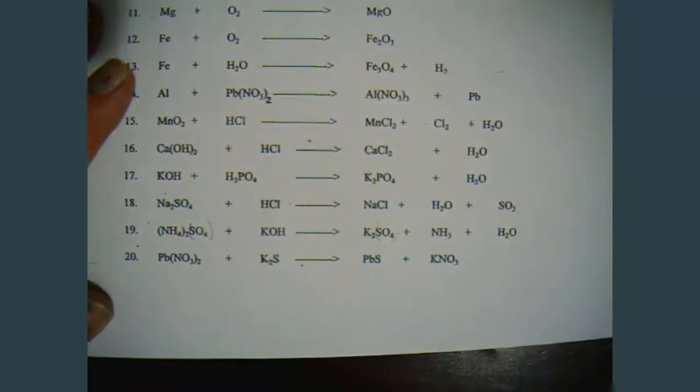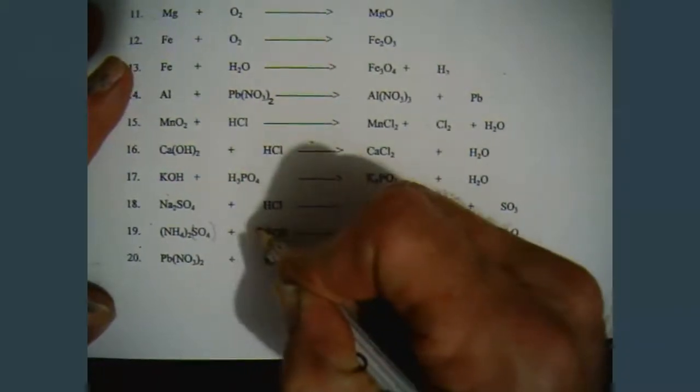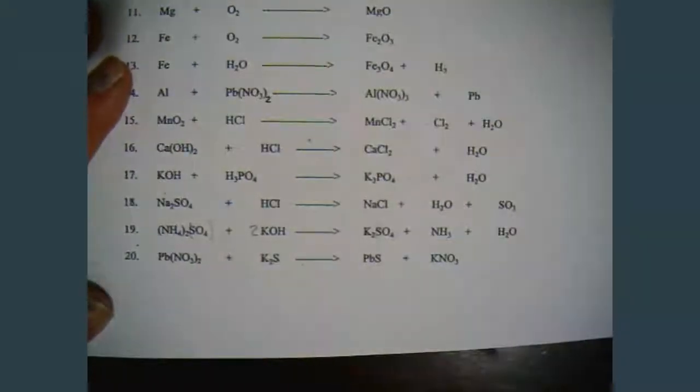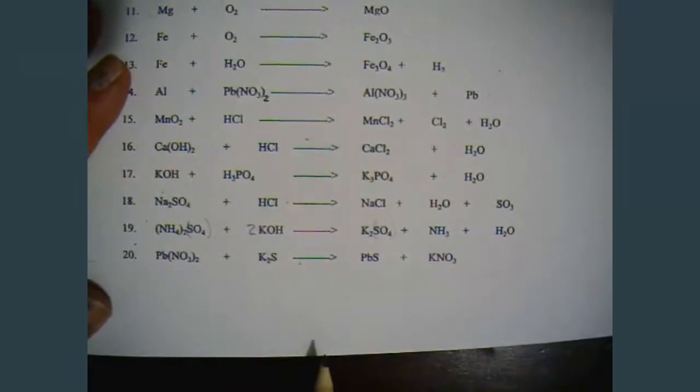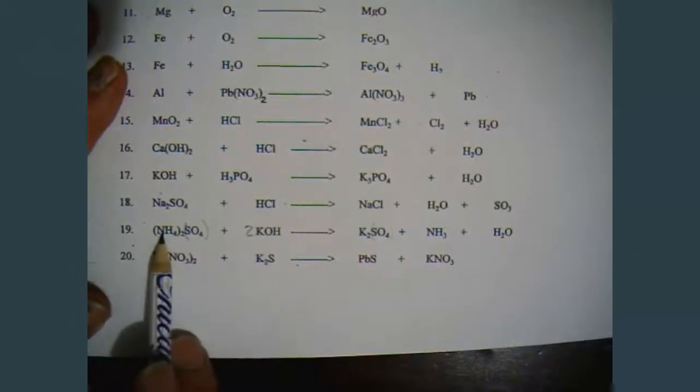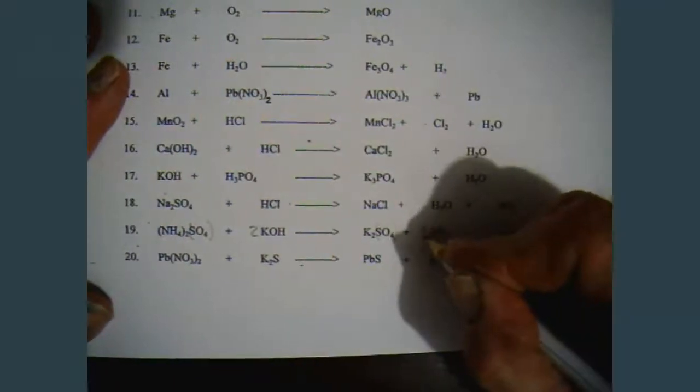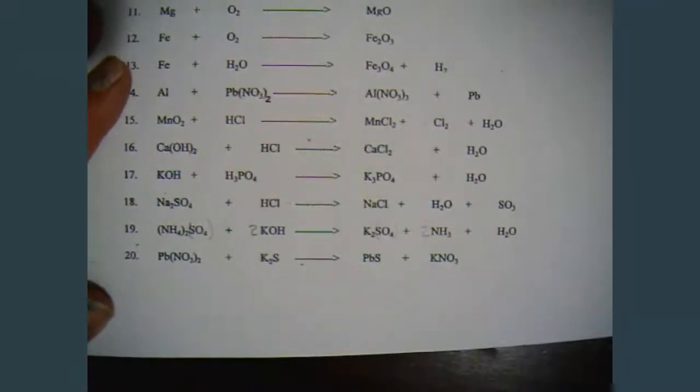So let's go ahead and balance the potassium. One potassium, two potassium. So I have to put two potassium on the left. Now let's go ahead and take care of the nitrogens. Now you have a subscript outside the parentheses. So you have to multiply it by two. So there's two nitrogen. Over here we have one. So we've got to put a two in front. So now I have two nitrogen on the left, two nitrogen on the right.